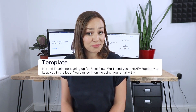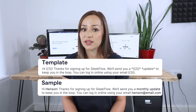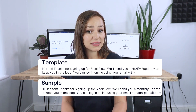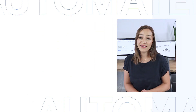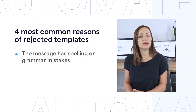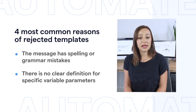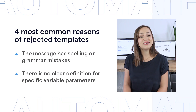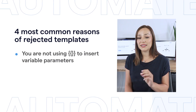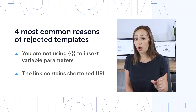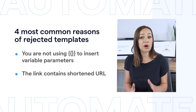It usually takes three hours to one day for template approval. Keep in mind that you'll need to follow WhatsApp requirements, including making sure that your variable parameters, translations, and links in the messages are correct, and attach a sample while submitting your template. Some of the common mistakes are: the message has spelling or grammar mistakes that make it look like spam or a hoax; there is no clear definition for specific variable parameters, like the type of media you plan to send in a media message; you are not using double curly brackets to insert variable parameters; or the link contains a shortened URL or the URL domain does not actually belong to your business.